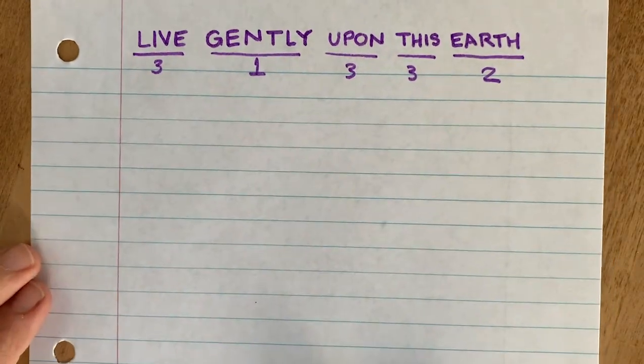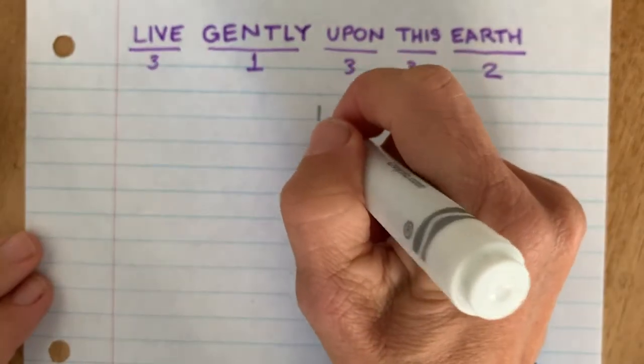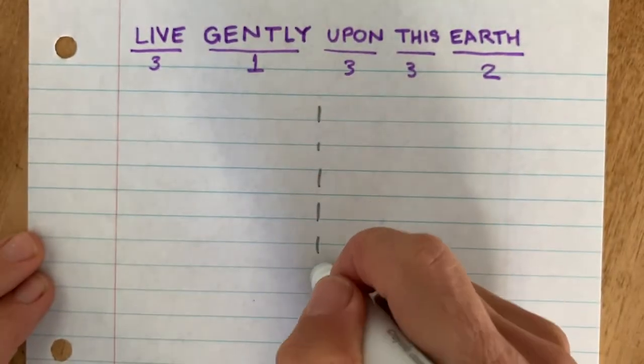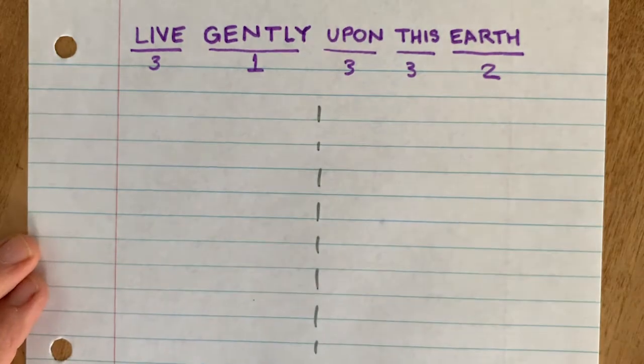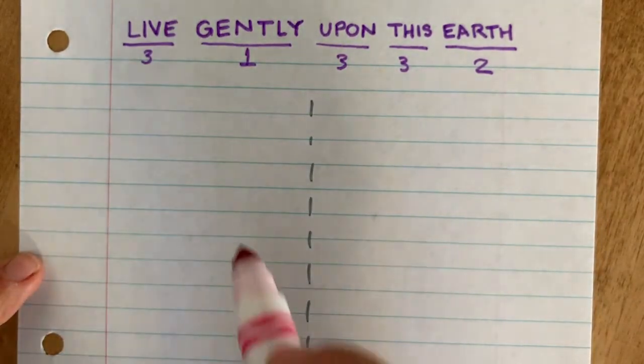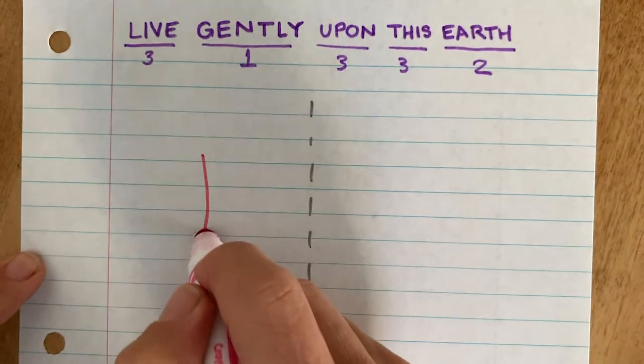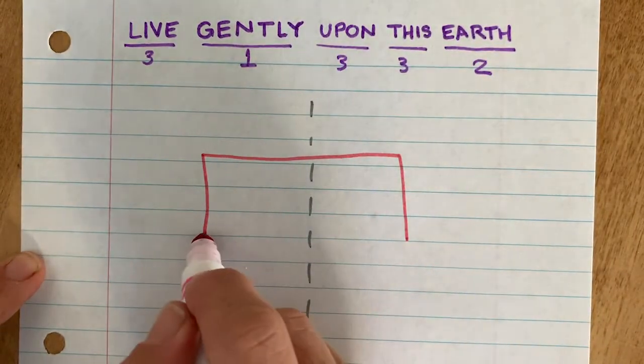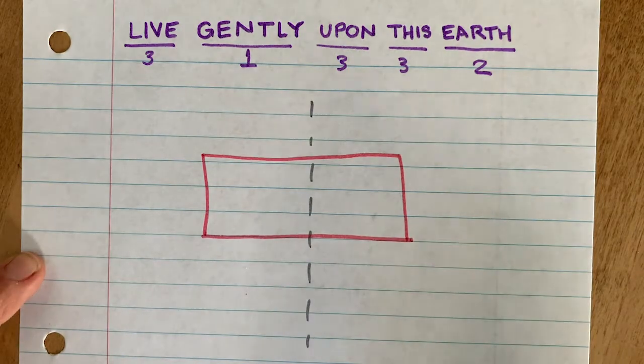I'm going to start with a centered layout. So the first thing I want to do is give myself a center line. And gently is going to be my most important word. So I'm going to make it the biggest. I'm going to just stack everything centered and use size as my hierarchy.